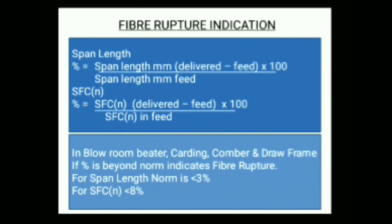It is very simple to estimate fiber rupture in our process. The formula for span length is: (length of delivered minus length of feed) divided by length of feed, multiplied by 100. For short fiber content by number, it is: (delivered minus feed) divided by feed, multiplied by 100.